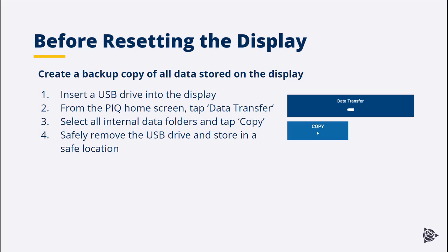Before resetting the display, it is suggested to backup all data. That process within PrecisionIQ is quite simple. First, insert a USB drive into the display. Navigate to the home page within PrecisionIQ and tap on Data Transfer. Select all folders and tap on Copy to backup all data. When the backup is complete, safely remove the USB drive and store it in a safe location.